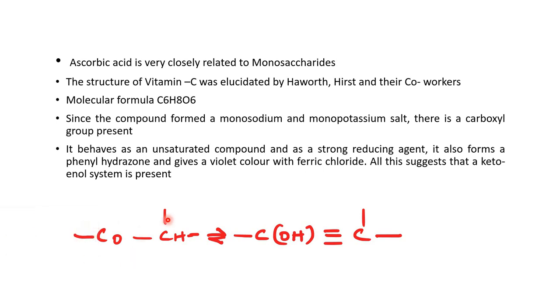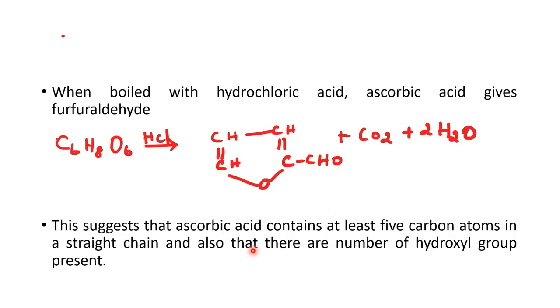This is keto form and this is enol form. This structure is present in ascorbic acid. Ascorbic acid, when boiled with hydrochloric acid, gives furfural along with one molecule of carbon dioxide and two molecules of water. This suggests that ascorbic acid contains at least 5 carbon atoms in a straight chain and also that there are a number of hydroxyl groups present.